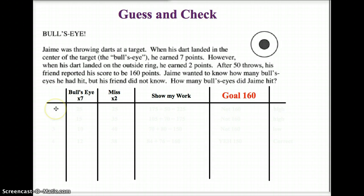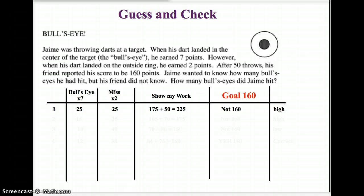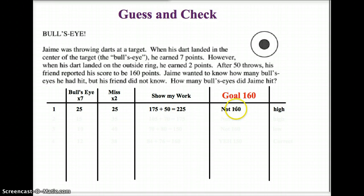So, Guess and Check. My first guess: I guess I had 25 bullseyes and 25 misses — a nice number right in the middle. When I show my work, I take 25 times 7 and get 175. I take 25 times 2 and get 50. I add those together and get 225. I'm not at 160 — I was too high. So I better lower the bullseye number.